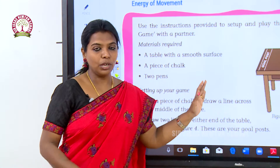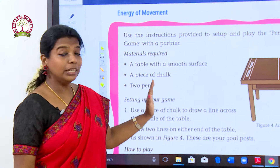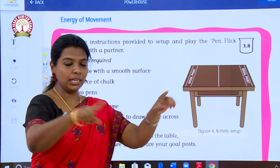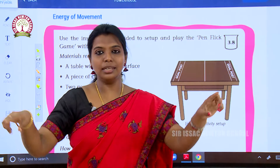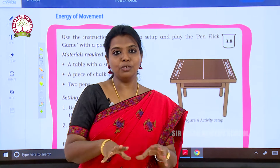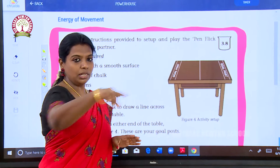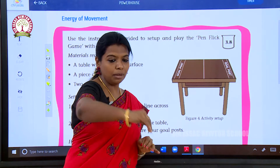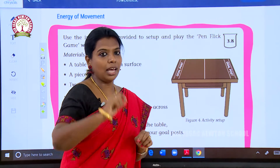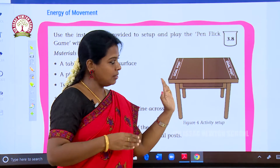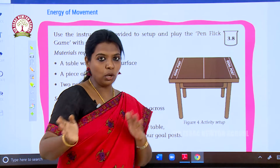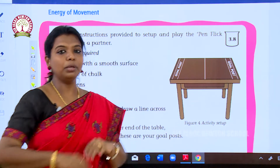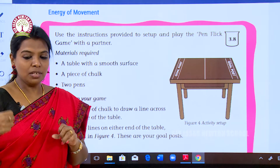For that we are going to see about the energy of movement. We are taking a table in our classroom and doing this as an activity. The table has been divided in half with a pencil, and in each corner we are going to keep a goal post.